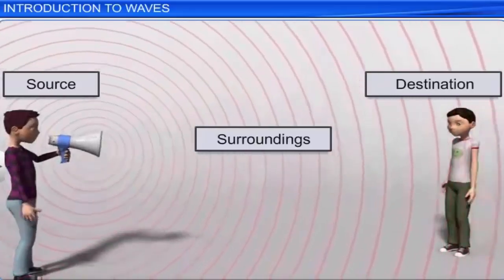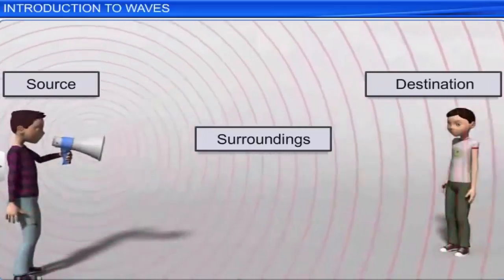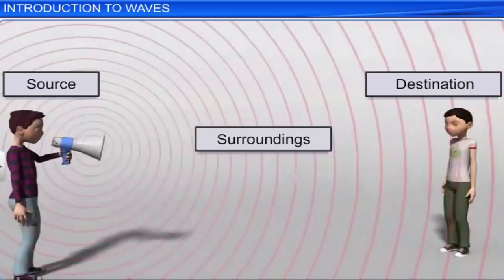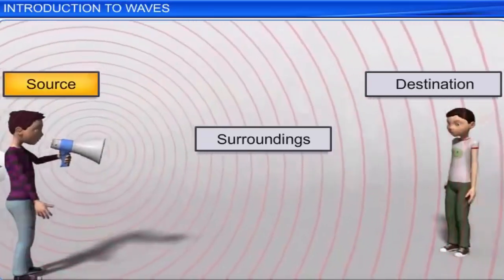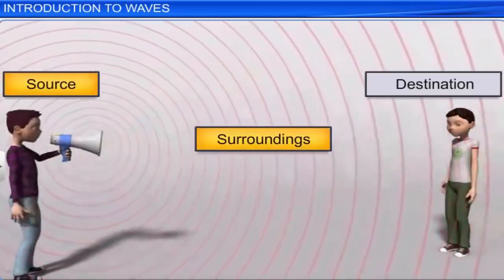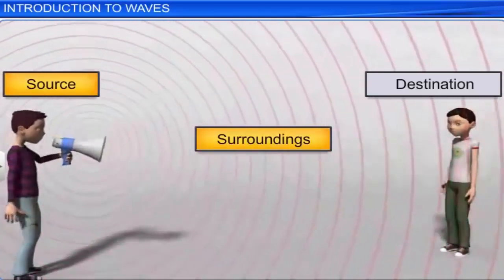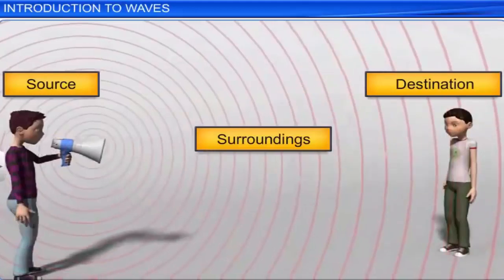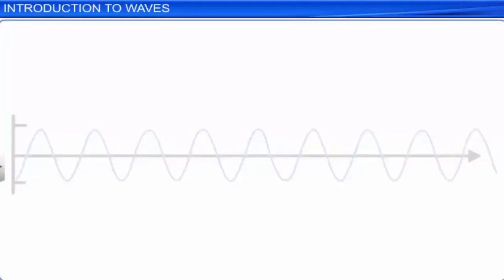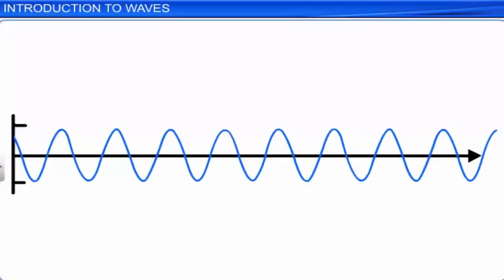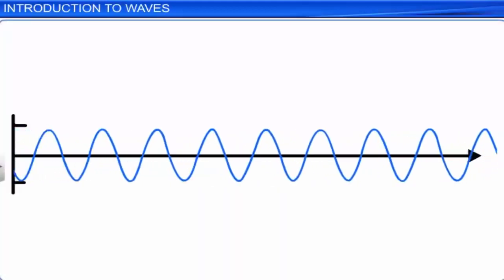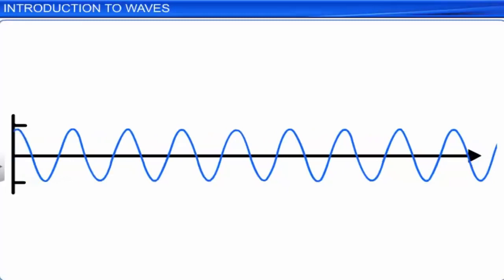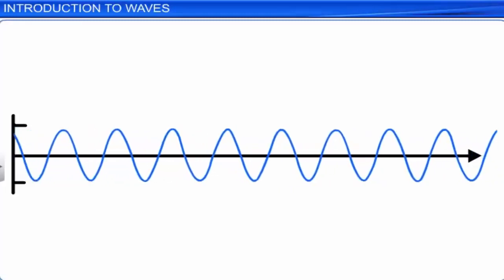Waves are a series of disturbances which propagate from a source to the surroundings or a destination. They carry along with them a certain amount of energy and information in the form of signals.